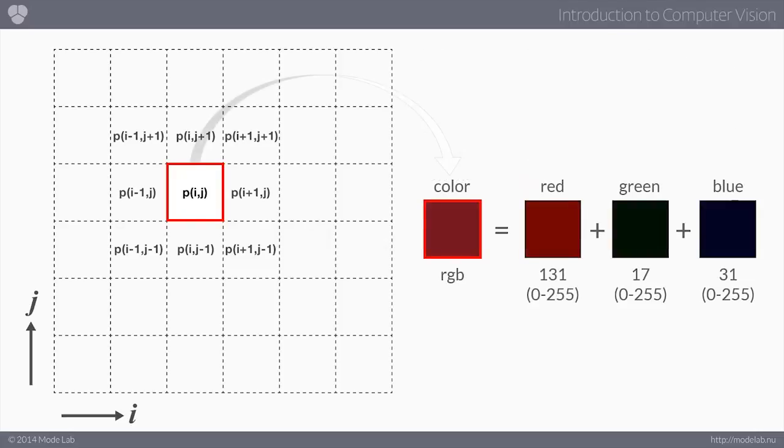So each particular pixel at I,J or any of the pixels are also storing some sort of color information. We spoke about earlier about how the camera actually records the red, green, and blue channels. So here, any particular color is always stored as a composite of three values, which are basically the red, green, and blue channels. And each of those are always going to fall between 0 and 255.